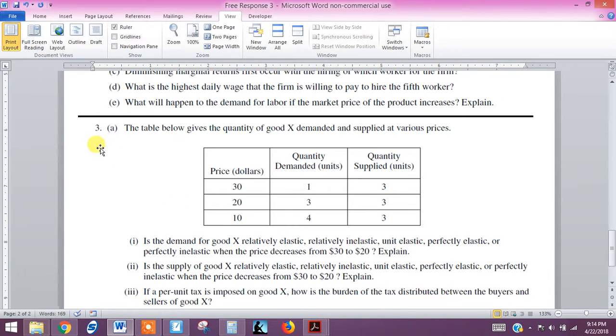We are looking at question 3 on free response 3. In question 3 we have a table showing the quantity demanded and quantity supplied of good X, and we can see our prices here.